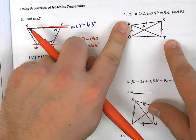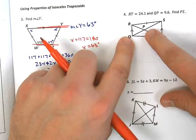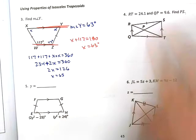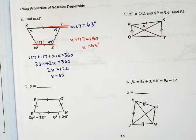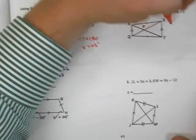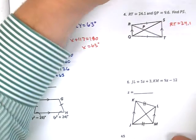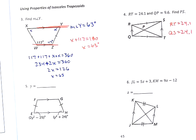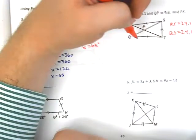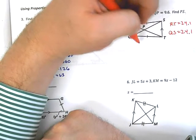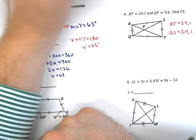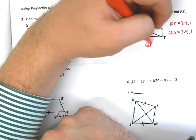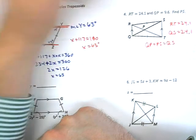Okay. RT is 24.1. QP is 9.6. Find PS. Alright. The trick here, guys, is for you to remember our last property of isosceles trapezoids, and that the diagonals must be congruent. So, if RT is equal to 24.1, guess what else is? QS. That's big. That's big, because now I can write, and if we think back to chapter 1 even, I can write a little story about part plus part equals whole. So, I can say QP plus PS equals QS, and then when I plug stuff in, this gets really nice.